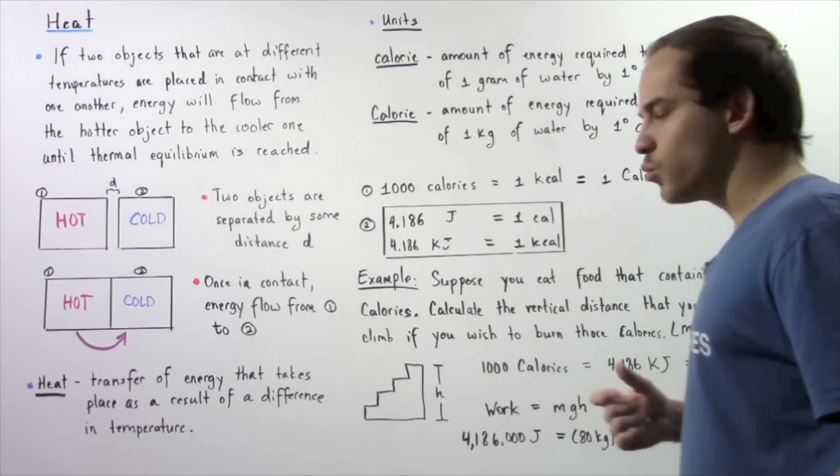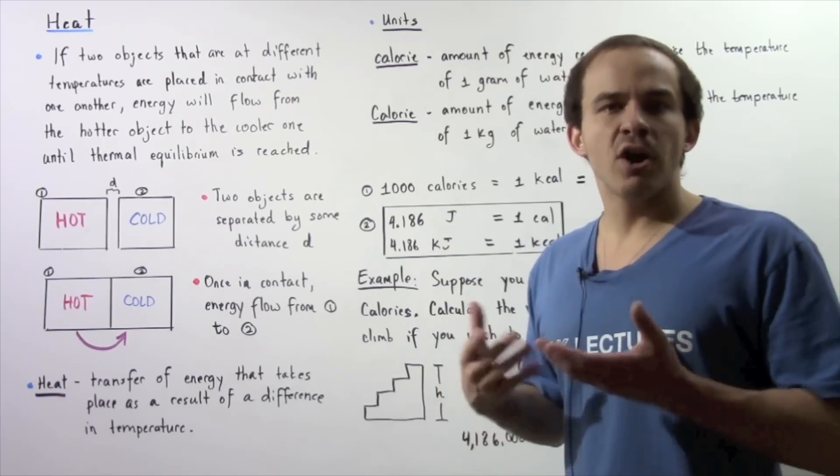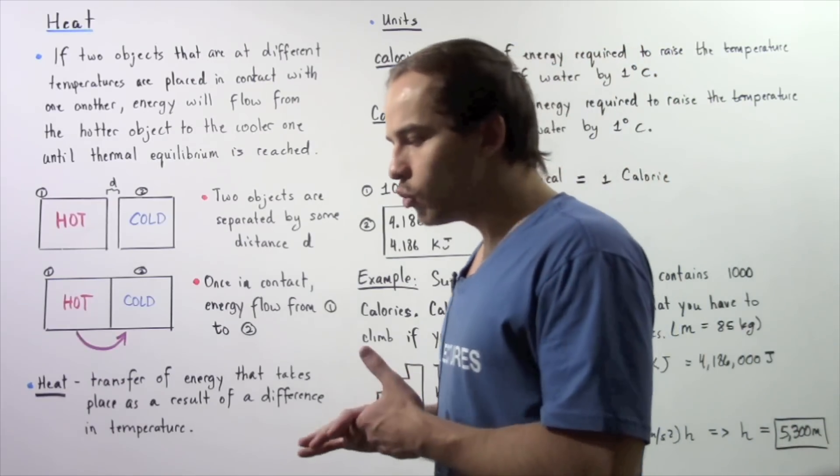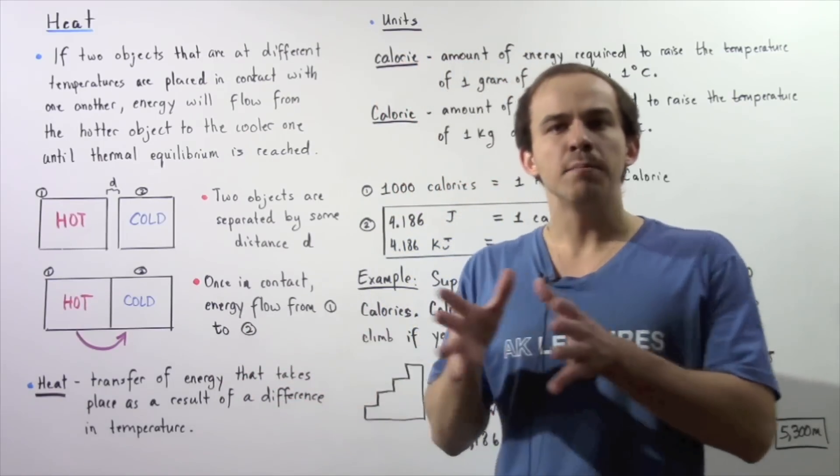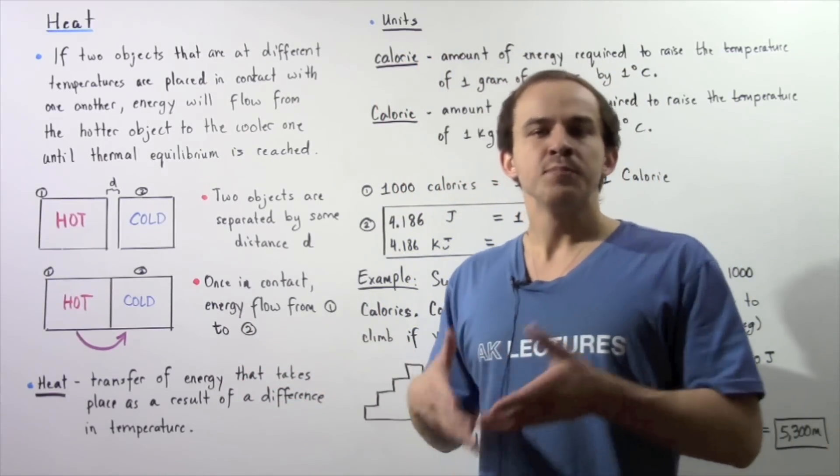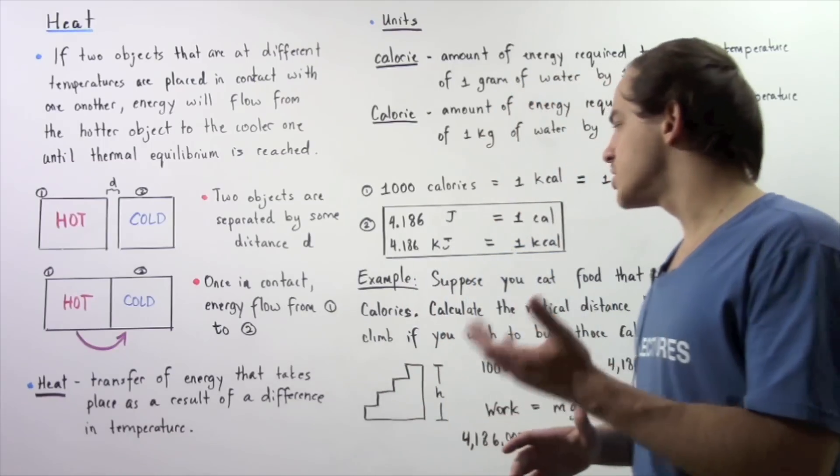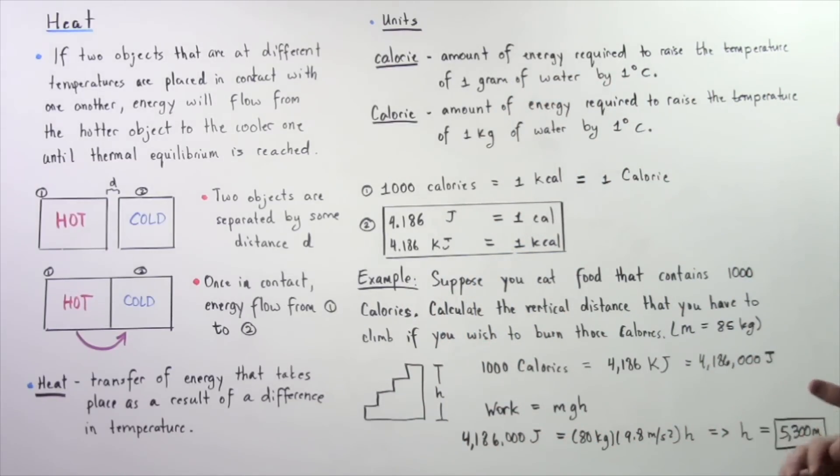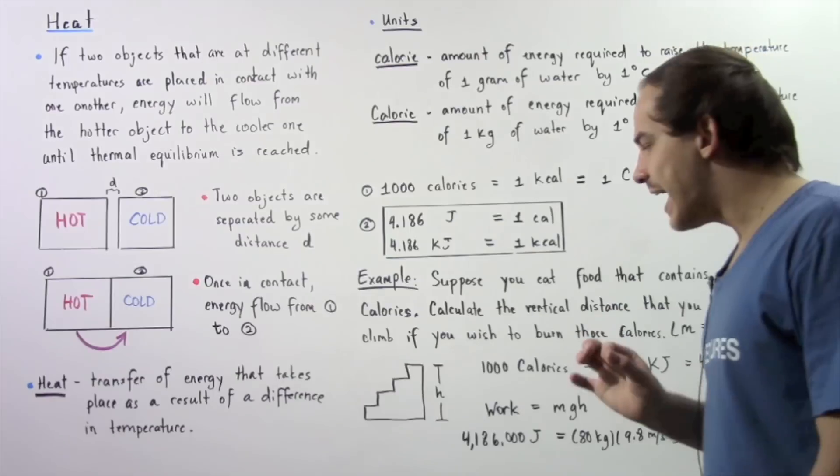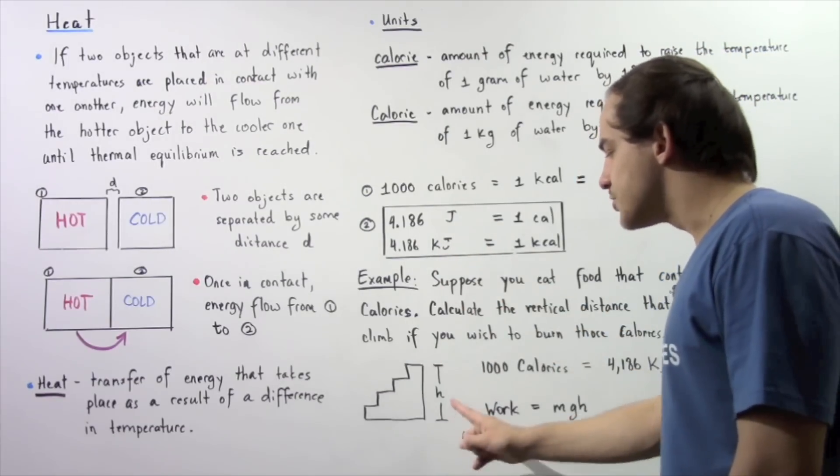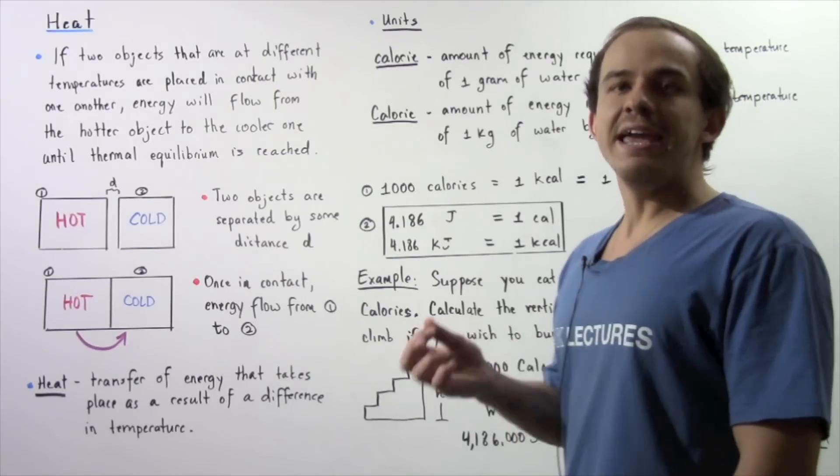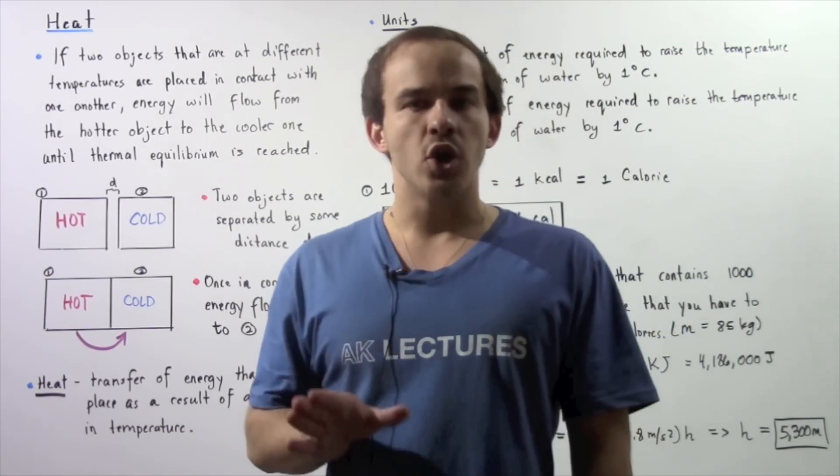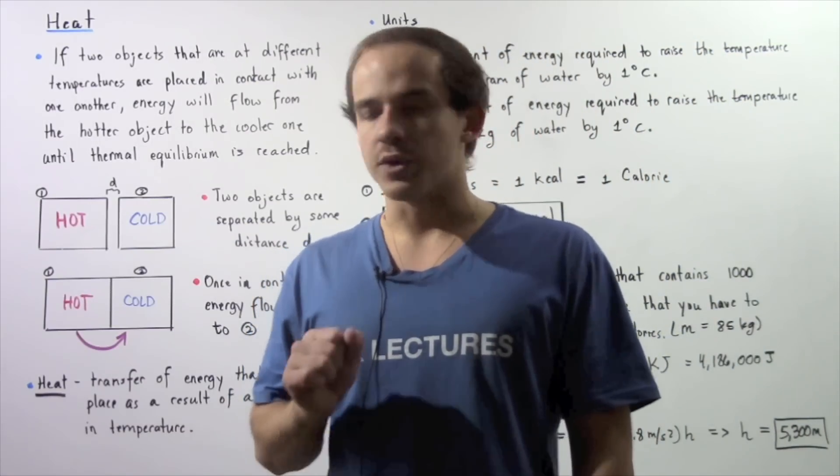Let's suppose we ingest the food and our body breaks down that food. If we don't actually physically exercise, our body will store that food in macromolecules such as carbohydrates and fats. We want to find out the vertical distance that we have to climb, let's say via staircase, if we wish to burn all those 1000 Calories.